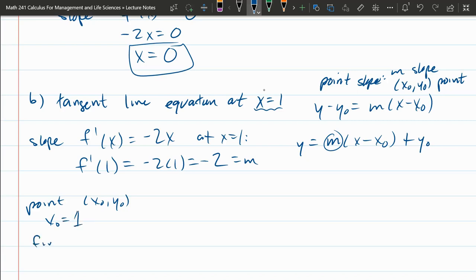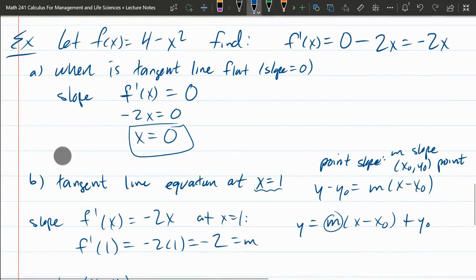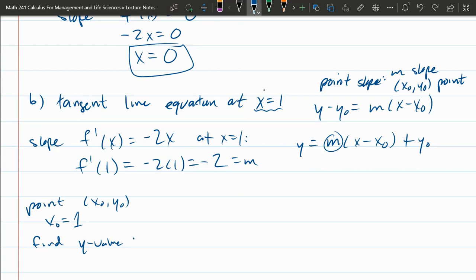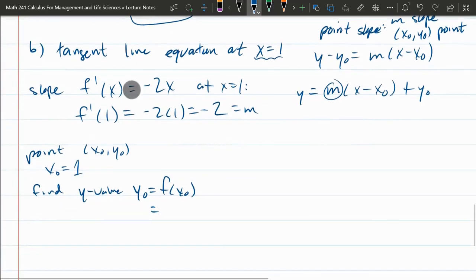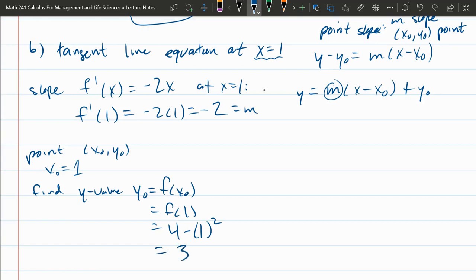We already know the x value is 1. That was given. So now we need to find the y-value. And we have our original function, 4 minus x squared. That's how you turn an x value into a y-value. So our y-naught is f of x-naught, which is f of 1. And our function was 4 minus x squared. 4 minus 1 squared, which is 3. So our y-value is 3.